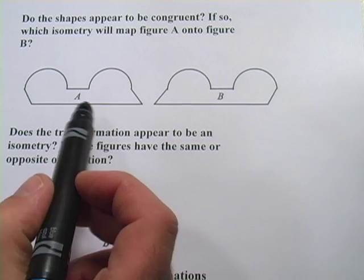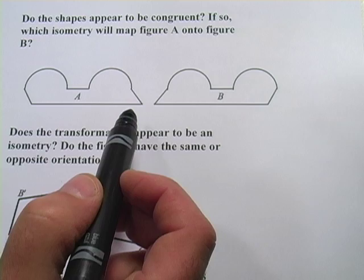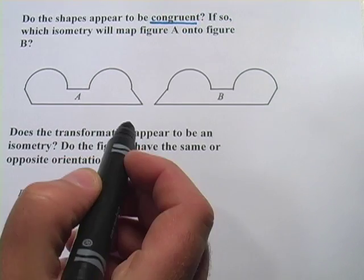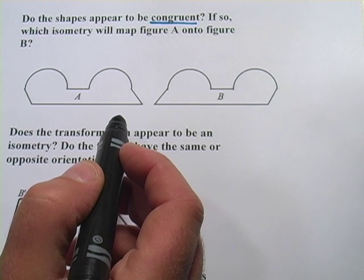It asks, do the shapes A and B here appear to be congruent? Well, congruent means that their sides are going to have the same measures, their angles are going to be the same angles.